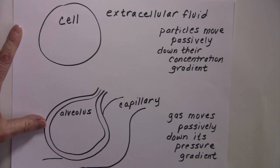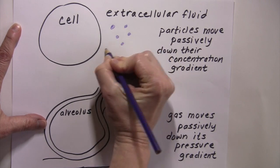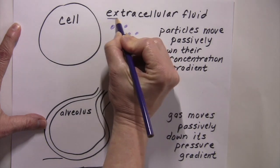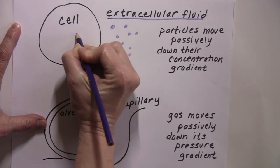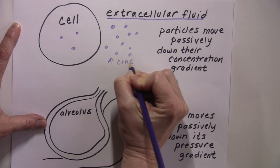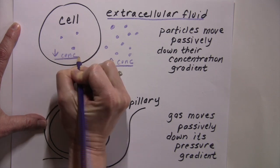We know with simple diffusion that particles want to move from the area of high concentration to low concentration. Here, I'm drawing some purple particles in the extracellular fluid and inside of the cell. I can see there's a higher concentration in the extracellular fluid. There's a lower concentration of particles in the cell.